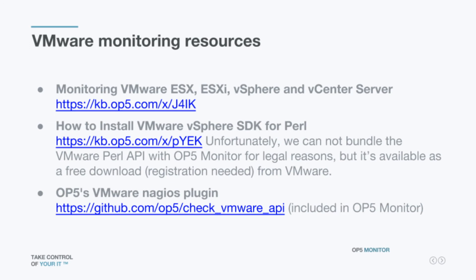Next question: when monitoring an ESXi host, the overall status check just shows a general error message — green or red. Is it possible to find any exceptions to get a more detailed view of what exactly causes an error? Not without going into the VMware environment directly, no.